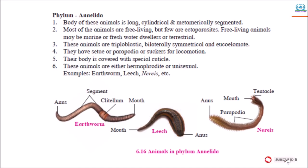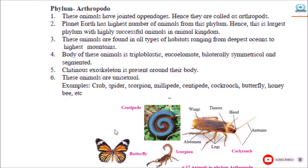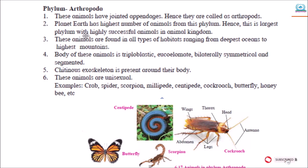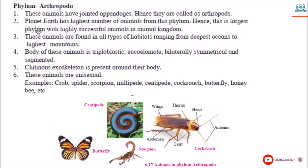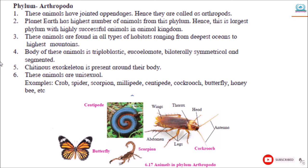The next phylum is Arthropoda. These animals have jointed appendages — appendages means their legs are jointed. Hence, they are called arthropods. Planet Earth has the highest number of animals from this phylum. Hence, this is the largest phylum with the most highly successful animals in the animal kingdom. These animals are found in all types of habitats, ranging from the deepest ocean to the highest mountains.